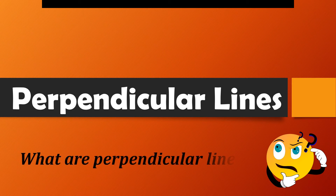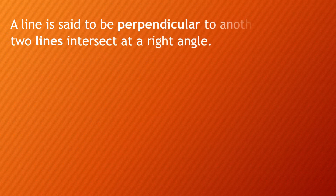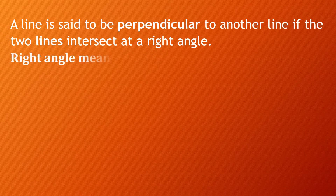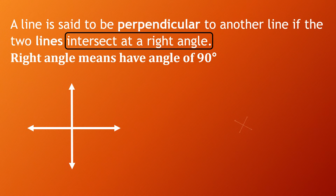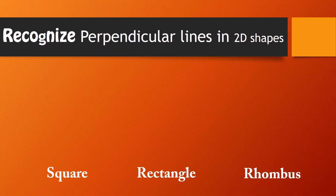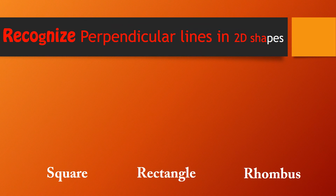Perpendicular lines: a line is said to be perpendicular to another line if the two lines intersect at a right angle. A right angle means having an angle of 90 degrees. We can recognize perpendicular lines in 2D shapes like in a square.